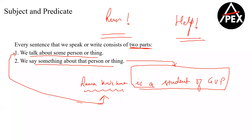That means 'run' and 'help' should not be sentences. But think about it this way: let us say you are on the street and a dog is chasing you — what will I say? I will say 'run.'